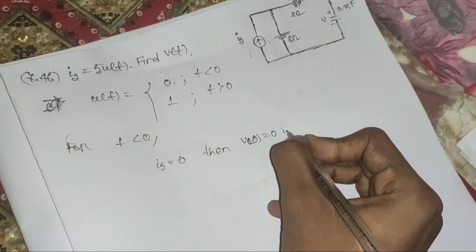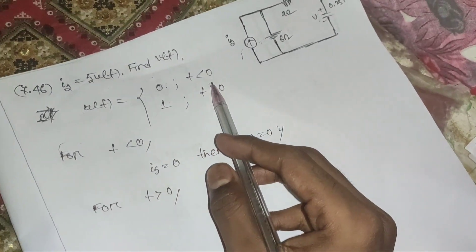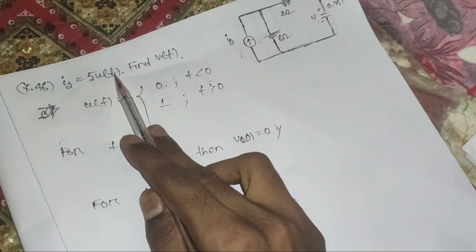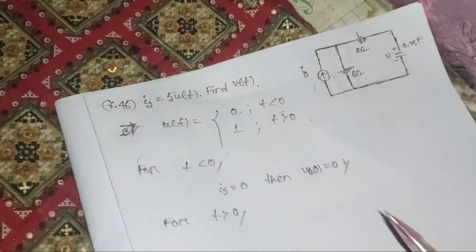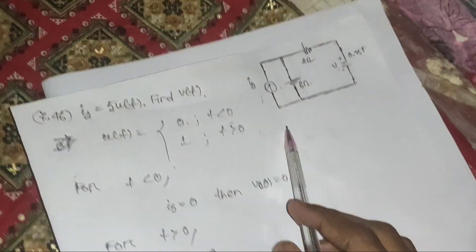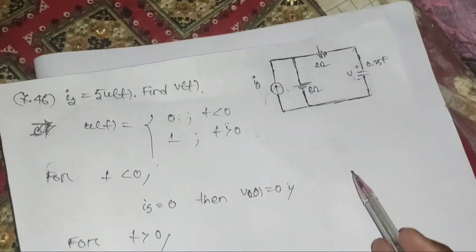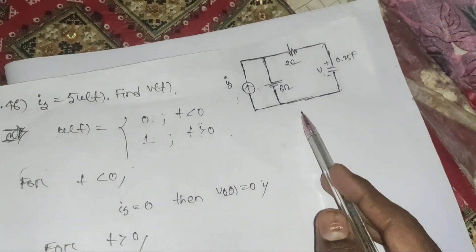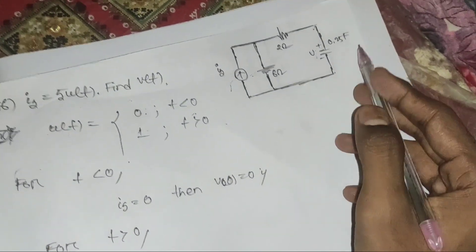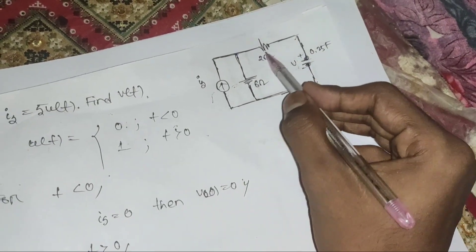For t greater than 0, u(t) equals 1, so the current is 5×1 = 5 amperes. With the current source active, the circuit reaches steady state. In steady state mode, we replace the capacitor as an open circuit and the inductor as a short circuit.